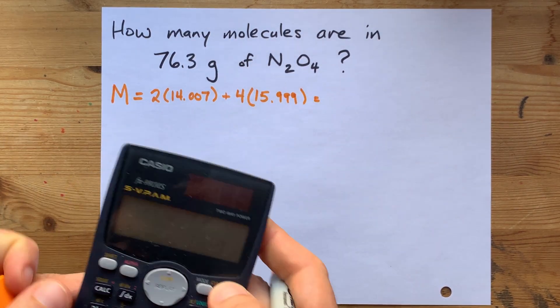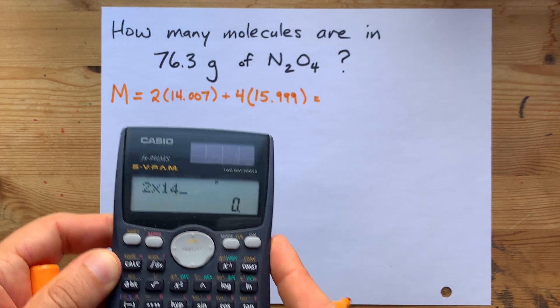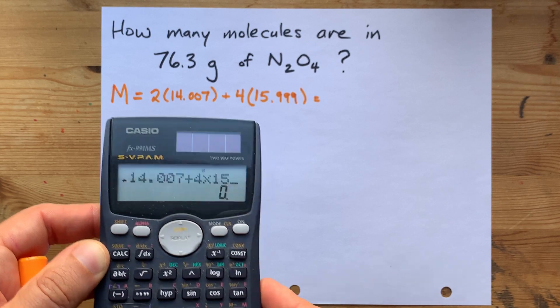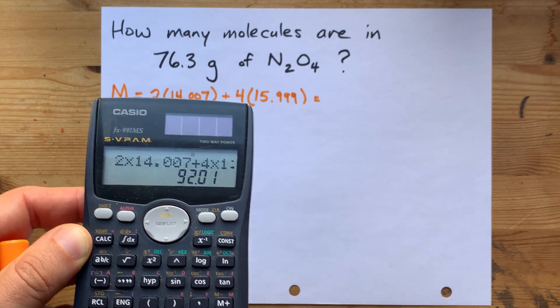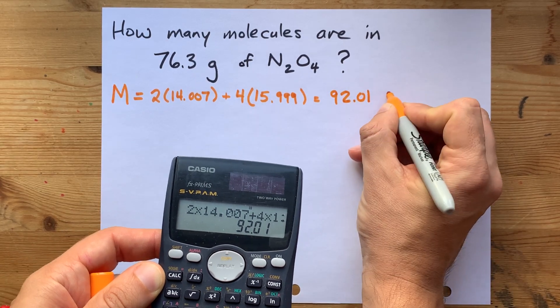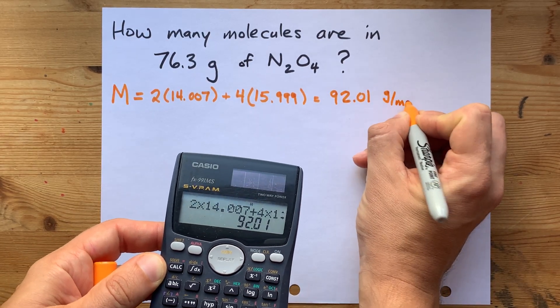When we combine these together, two times 14.007 plus four times 15.999. This gives me 92.01 of the units on molar mass or grams per mole.